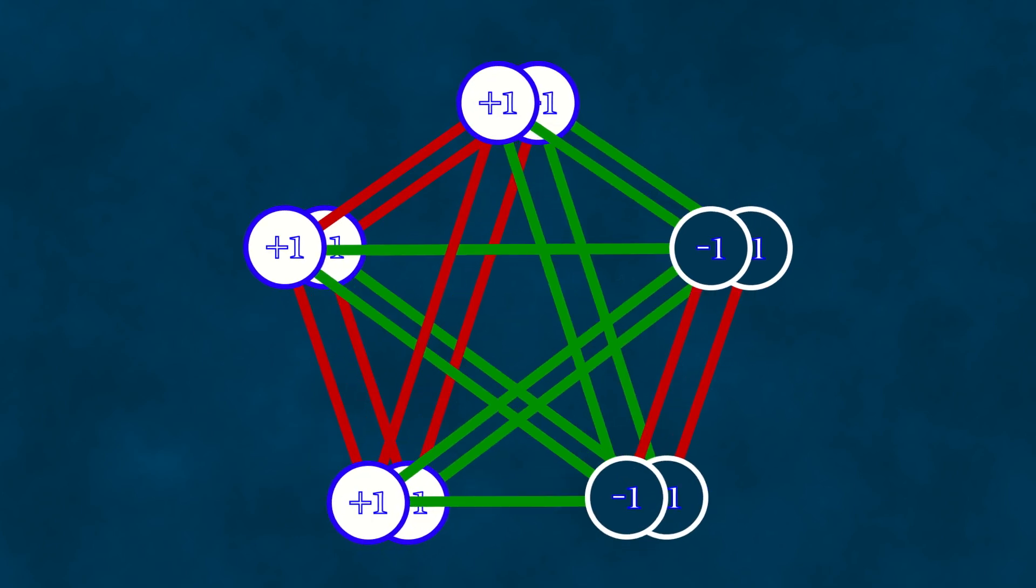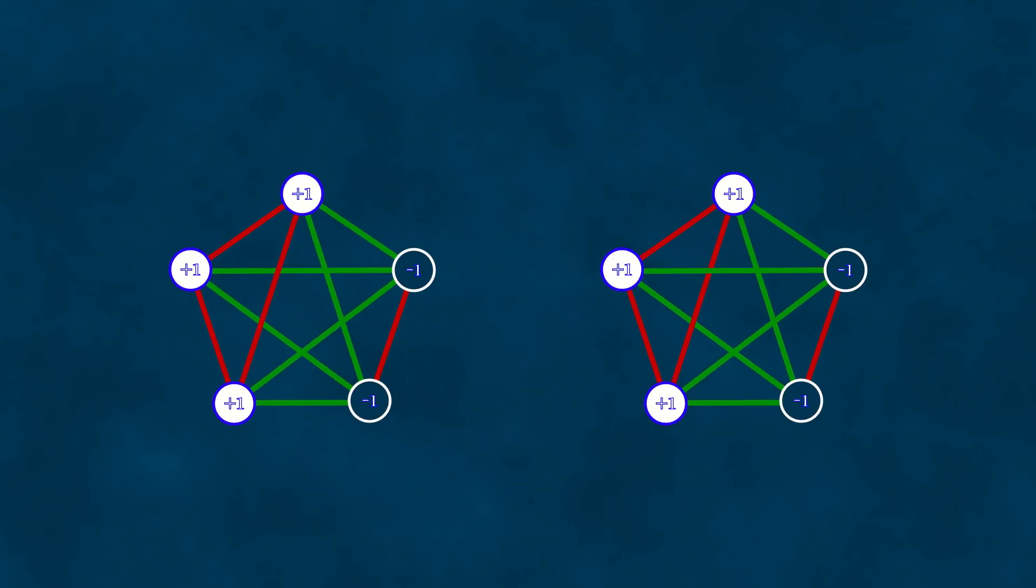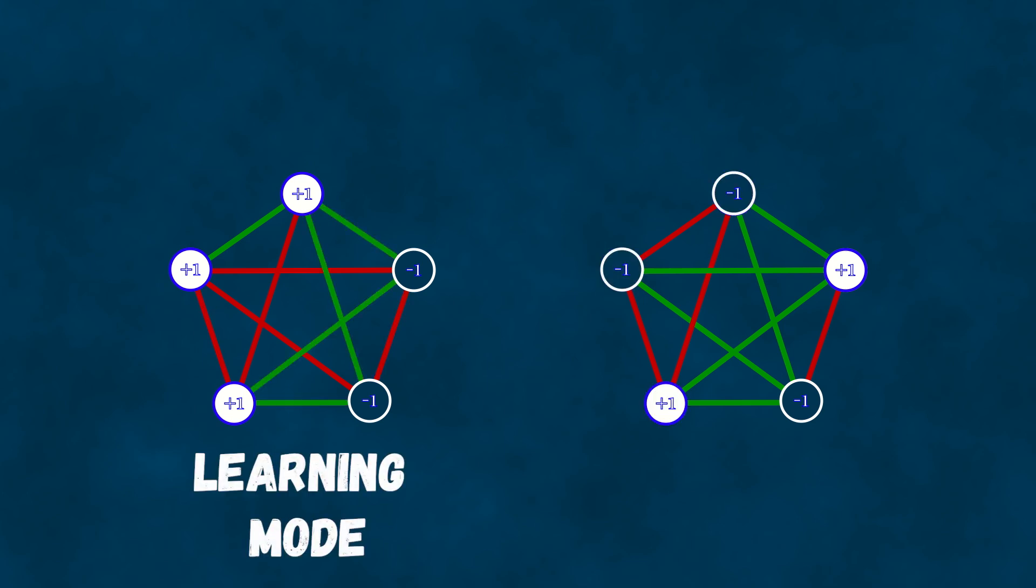You can bring the network to an optimal state with minimum energy in two ways. First, by adjusting the synapse weights to match the neuron values, and second, by changing the neuron values to match the synapse weights. In the Hopfield network, both methods are used. The first during the data upload into the network, also known as the learning mode, and the second during the network's analysis of an image it needs to recognize, known as the retrieval mode.